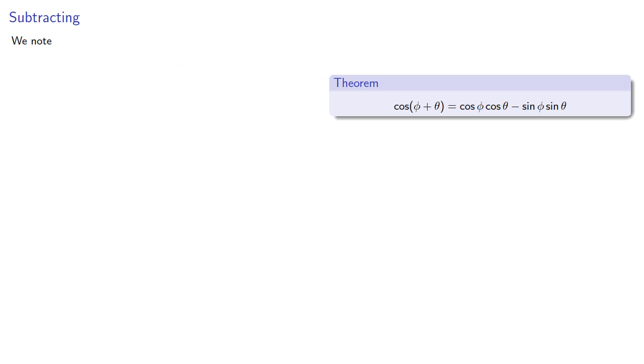For a difference, we'll note that the cosine of A minus B is the same as the cosine of A plus negative B, and so now this is the cosine of a sum.